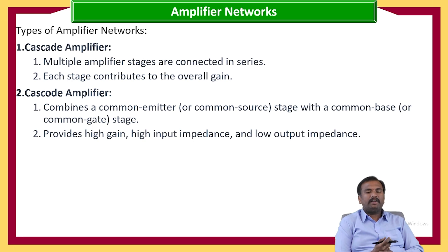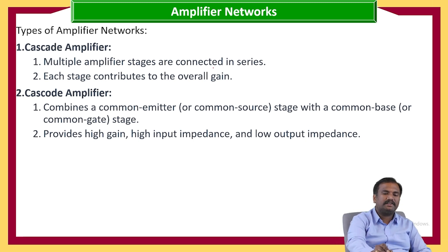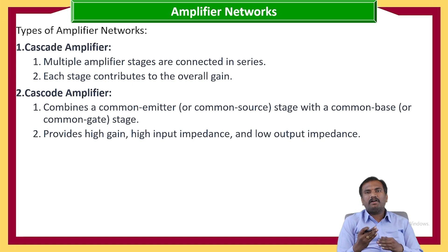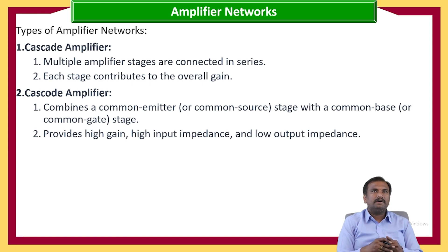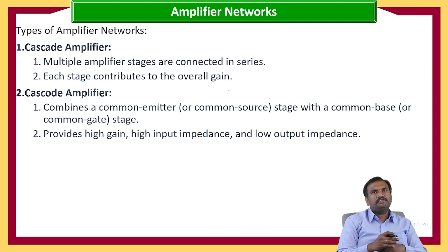There are different types of amplifier networks. The first is the cascade amplifier, where multiple amplifier stages are connected in series. If n number of amplifiers are connected together in series, that configuration is called a cascade amplifier. Each stage contributes to the overall gain.